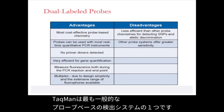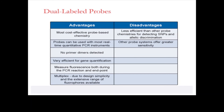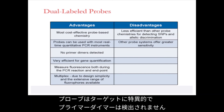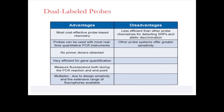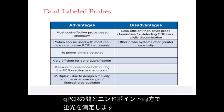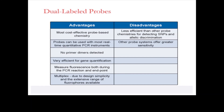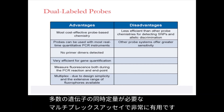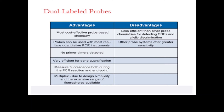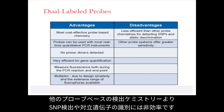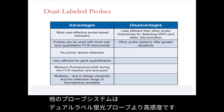The advantages of TaqMan: it is one of the most common probe-based detection systems and the probe can be used for many real-time qPCR platforms. There is no primer dimer detected as the probe is specific to the target only. The dual-label fluorescent probes are very efficient for gene quantification and can measure fluorescence both during qPCR and at endpoint. They are very useful in multiplex assays where the simultaneous quantification of multiple genes is required. A few disadvantages: they are less efficient than other probe-based chemistries for detecting SNPs and allelic discrimination, and other probe systems offer greater sensitivity than dual-label fluorescent probes.